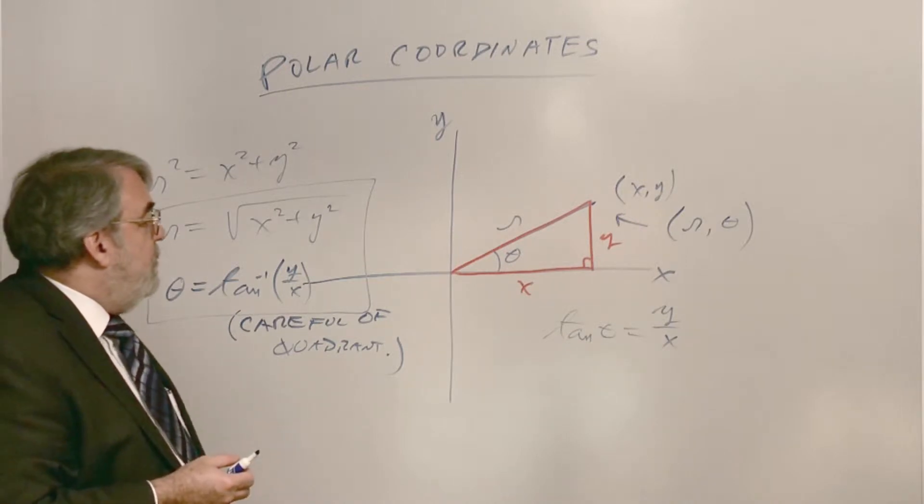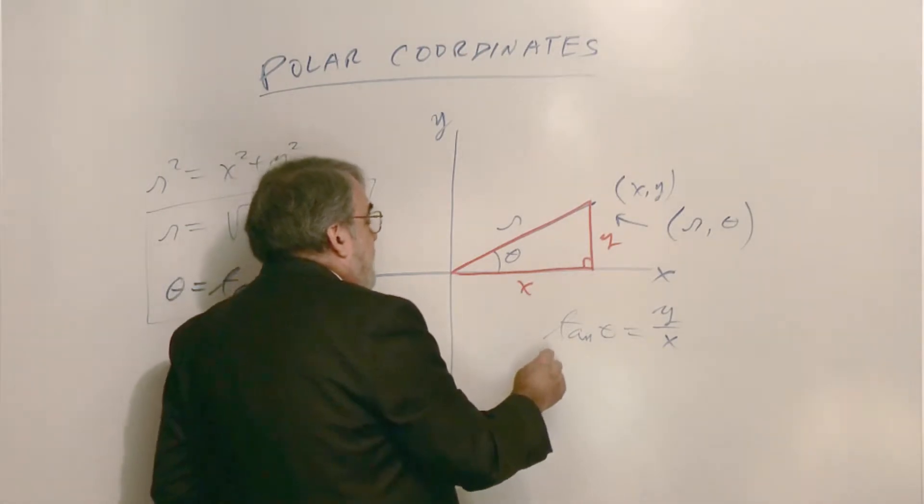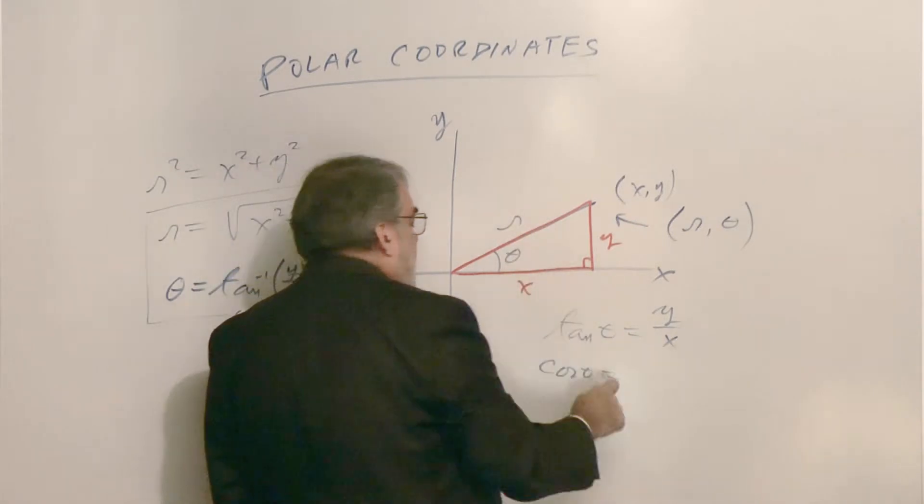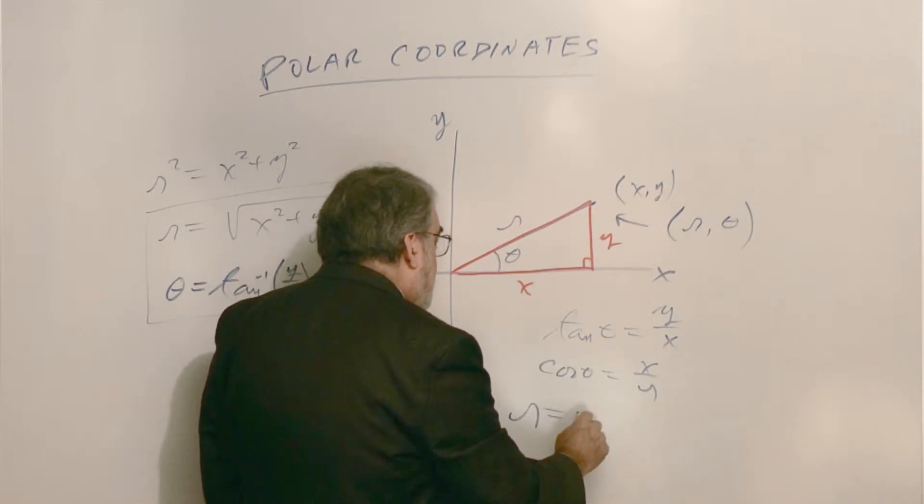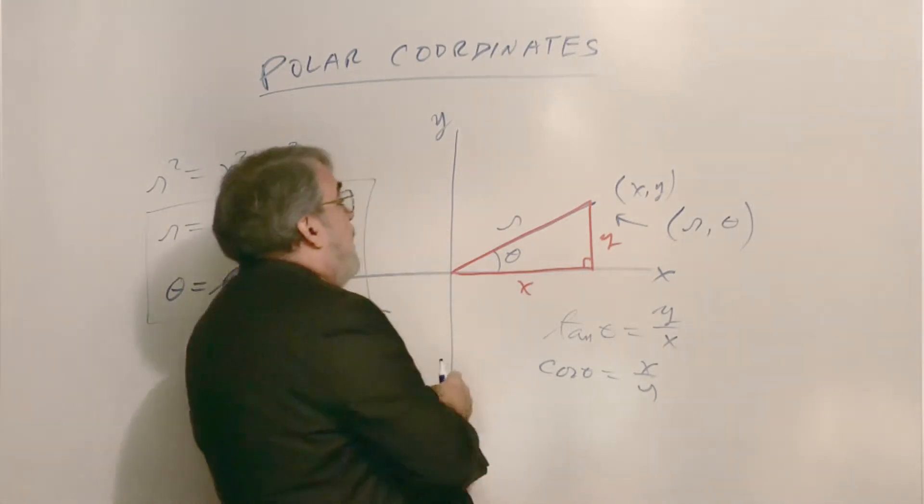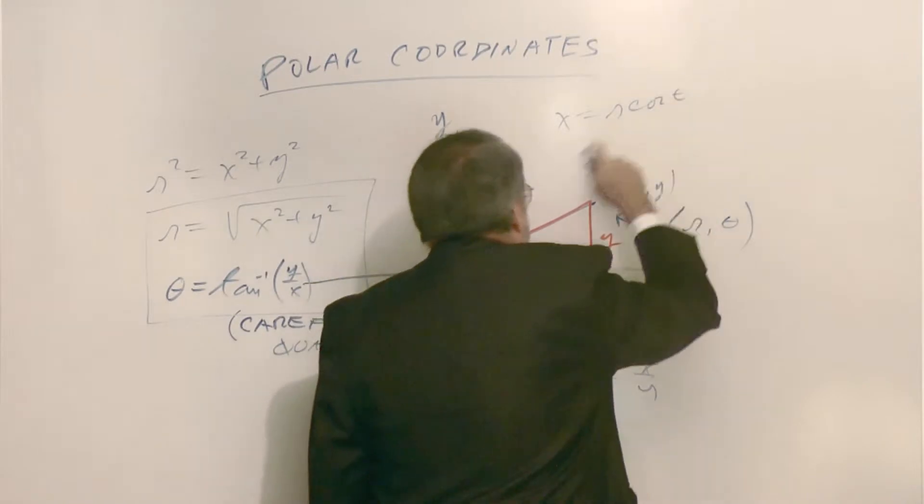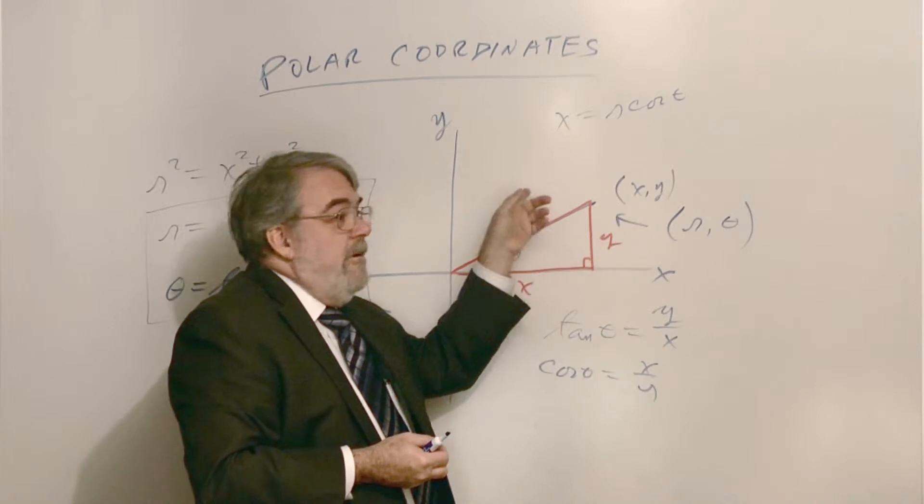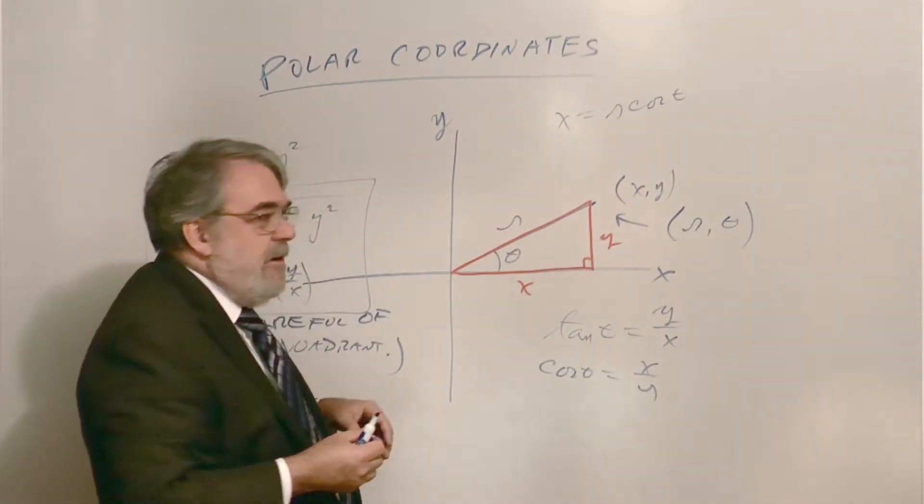Now, what if you knew a coordinate in r theta form, polar form? How do you get back to x and y? All right, well, trigonometry, because the cosine of theta would be x divided by r. So that means that x is r cosine theta.